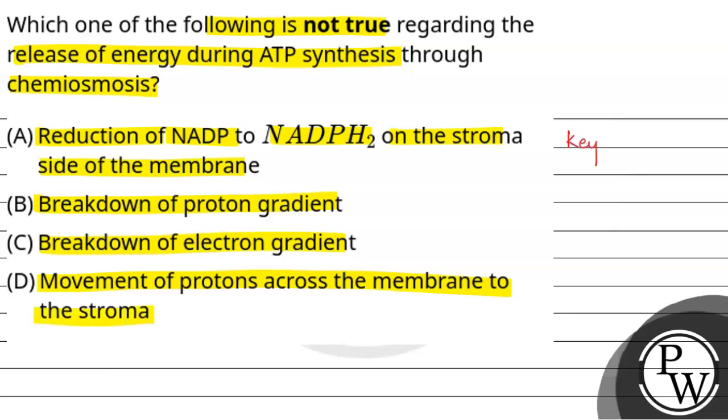So the key concept for this question is chemiosmosis. Chemiosmosis basically has three major components. First is the proton gradient, second is ATP synthase, and third is the proton pump.